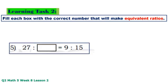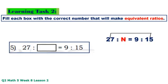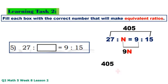Number 5: 27 times 15 equals 405, N times 9 equals 9N. 405 divided by 9 equals 45.